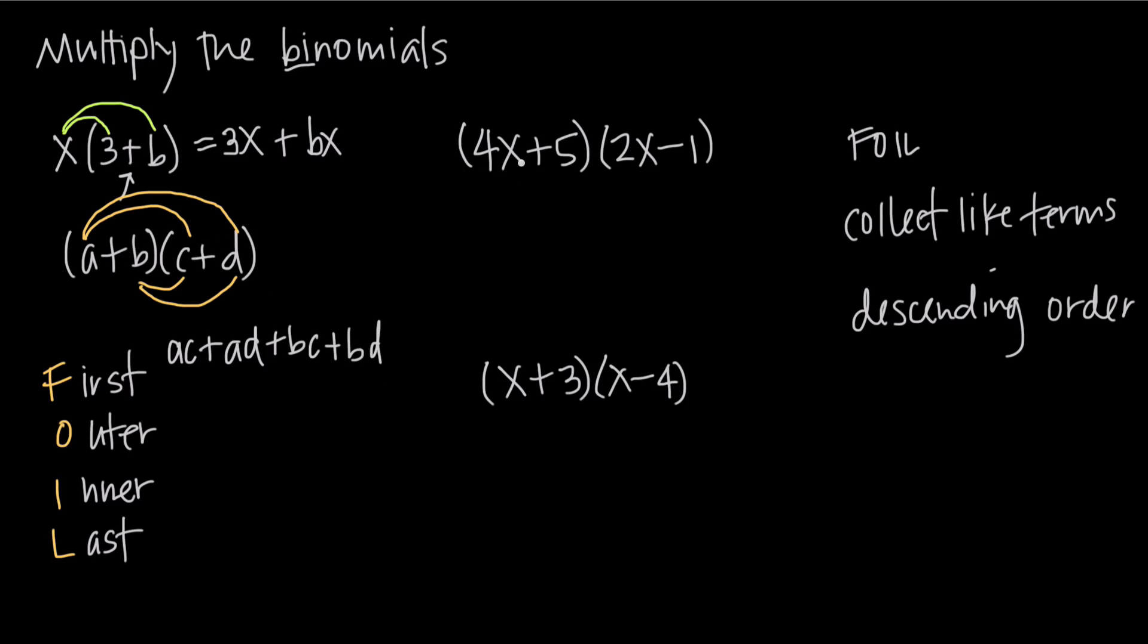Let's look at an example with some real numbers and variables here. The steps we're going to follow again, we're going to FOIL the terms, then we're going to collect our like terms together, and then we're going to make sure that the answer we write is written in descending order of exponents.